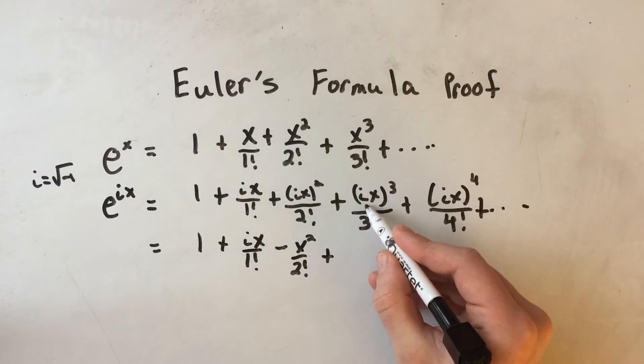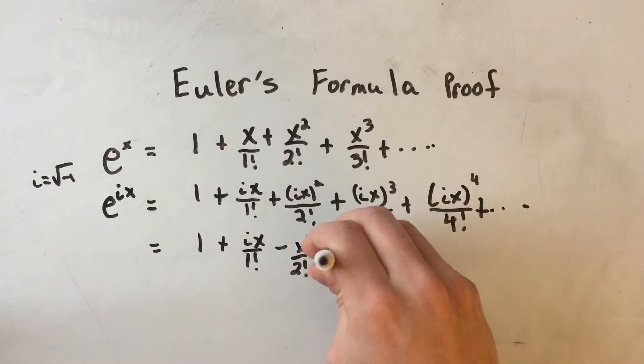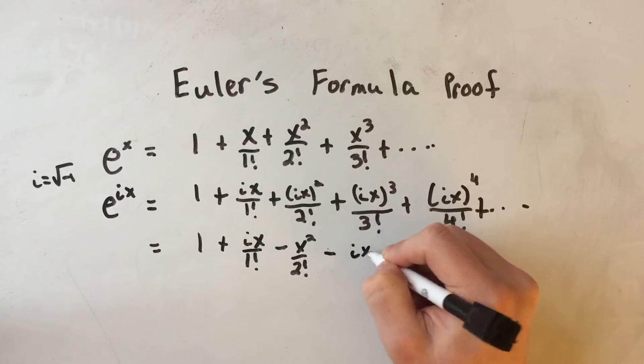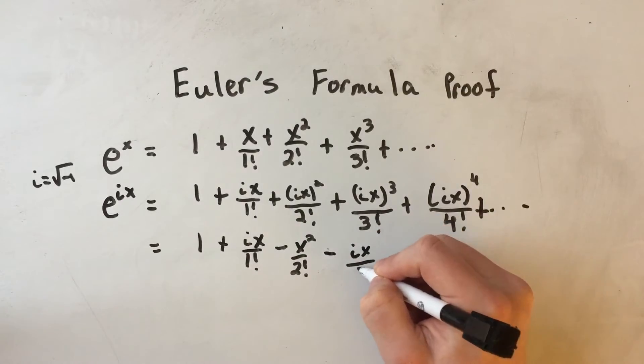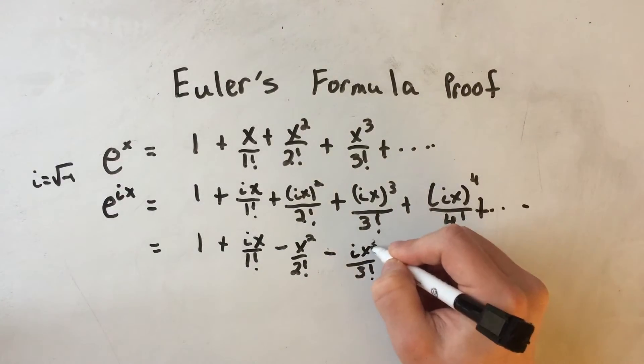Plus, well i cubed, i cubed is negative i, because i squared would give me the negative 1 times an additional i, so that would be negative ix cubed over 3 factorial.